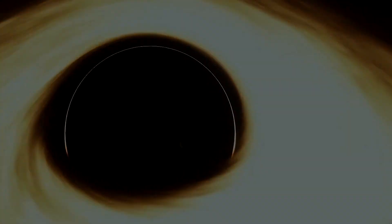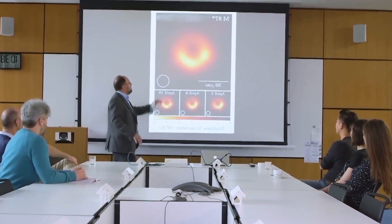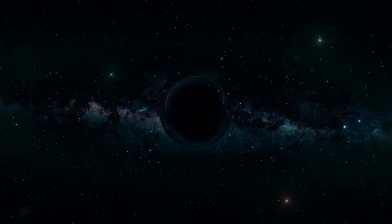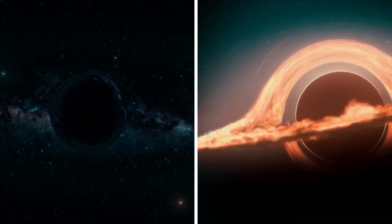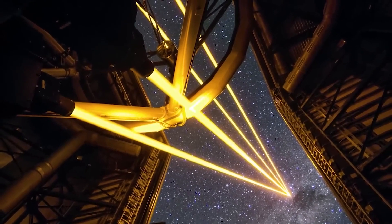The black hole is located in the galaxy Holmberg 15a, approximately 700 million light-years away from Earth. It's estimated to be 40 billion times more massive than our Sun, and 10,000 times more massive than the black hole at the center of the Milky Way.